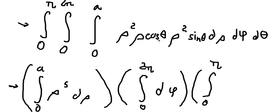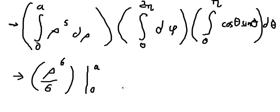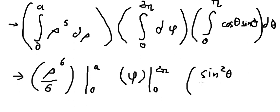That is cosine theta sine theta. So this one, we have rho to the power of 6 over 6. This one, we have phi. This one, we have sine theta squared over 2.